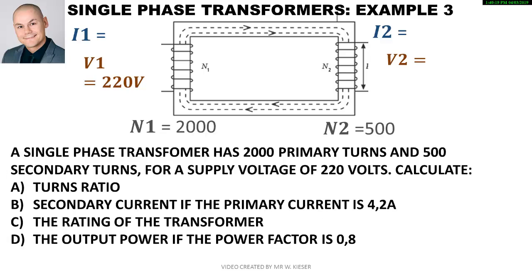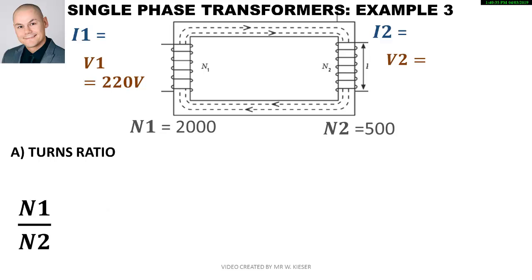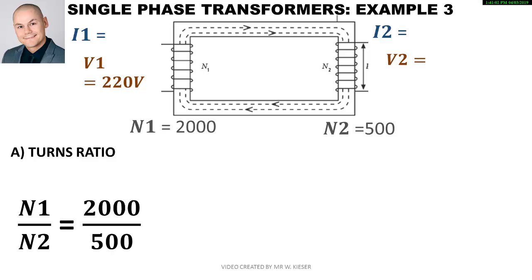Example 3. A single phase transformer has 2,000 primary turns and 500 secondary turns — therefore this is a step-down transformer — with a supply voltage of 220 volts. Drawing the single phase core and labelling all values, to calculate the turns ratio we use the number of turns. N1 is 2,000 and N2 is 500. Since 500 goes into 2,000 four times, the ratio is 4 to 1.